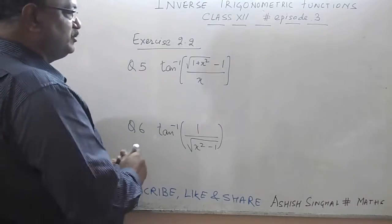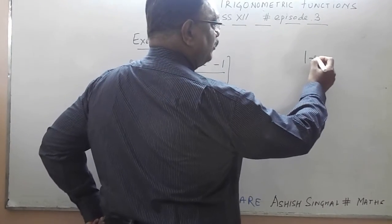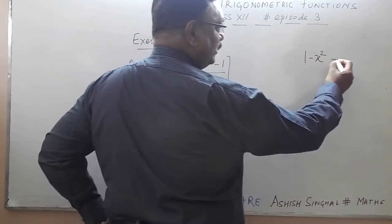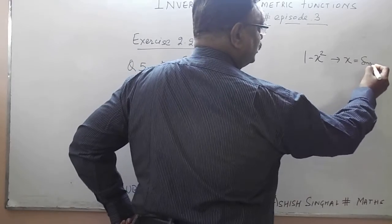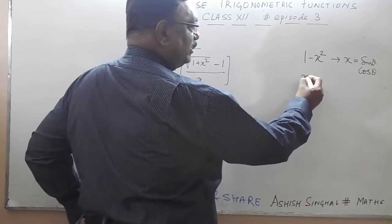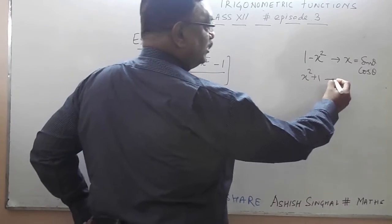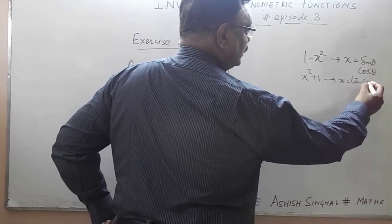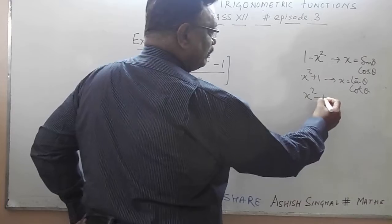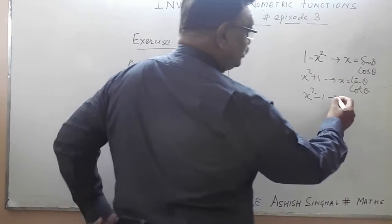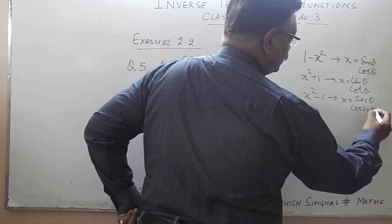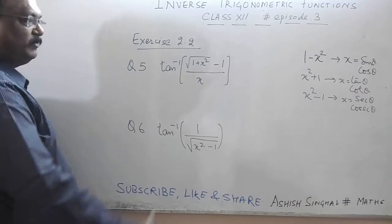Recall from the last episode: whenever you have 1 minus x² or root of 1 minus x², substitute x = sin θ or cos θ. Whenever you have x² + 1, substitute x = tan θ or cot θ. Whenever you have x² - 1, substitute x = sec θ or cosec θ.